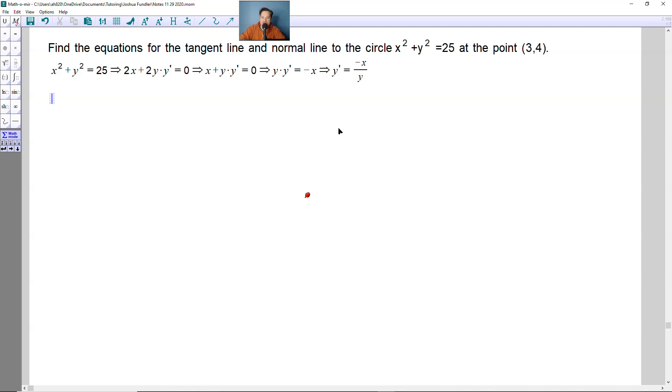Now that we have an expression for the derivative, negative x over y, we need to evaluate at the given point of (3,4). So y prime, evaluated at (3,4), would be equal to negative 3 over 4.